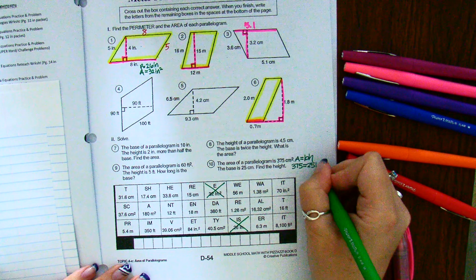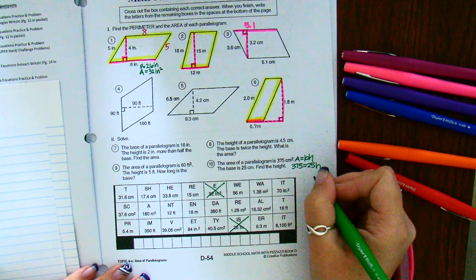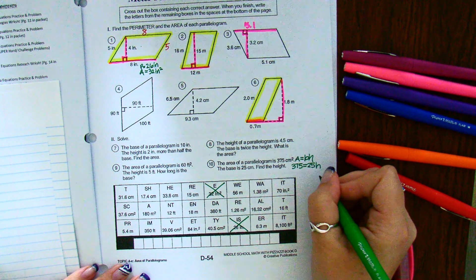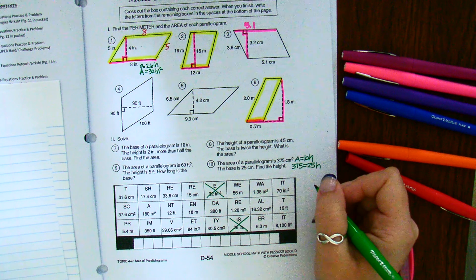I don't know the height. How do you think you would find the height? 25 times what is 375? That's my hint to you for number 10.